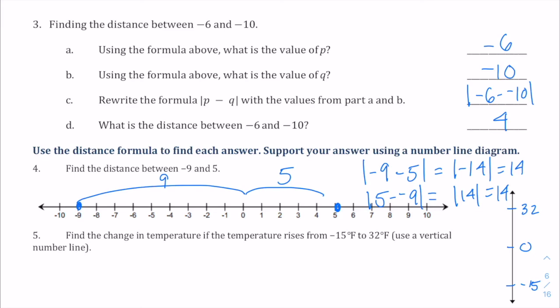So you might recognize that there would be a jump of fifteen up to zero, and then a jump of thirty-two more. And that would get us a jump of forty-seven degrees. We can also use our formula, absolute value of negative fifteen minus thirty-two. Close our absolute values. That's equal to the absolute value of negative forty-seven, which is forty-seven. So it changed by forty-seven degrees Fahrenheit.